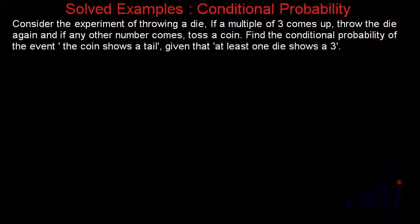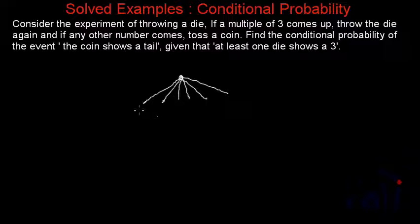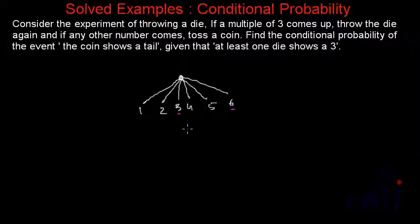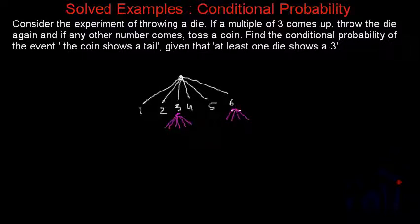Consider the experiment of throwing a die. If we throw a die, there can be total six outcomes: one, two, three, four, five and six. If the multiple of three comes up — that means if three or six comes up — throw a die again. If we throw a die again, we will get total six outcomes for each of these outcomes.